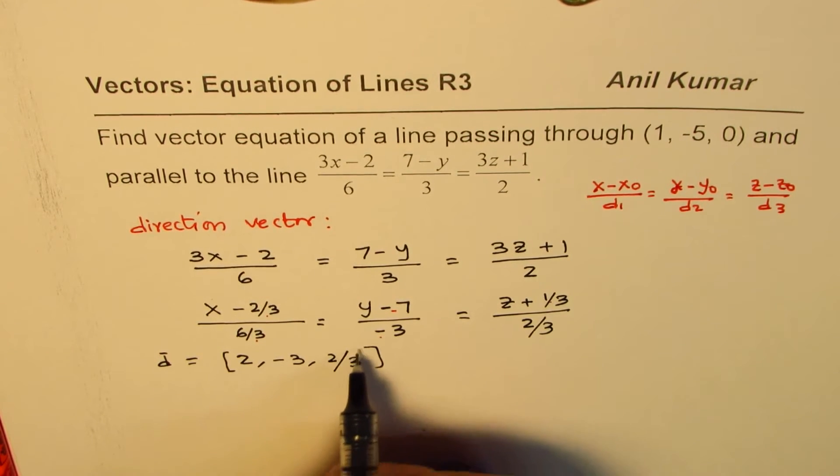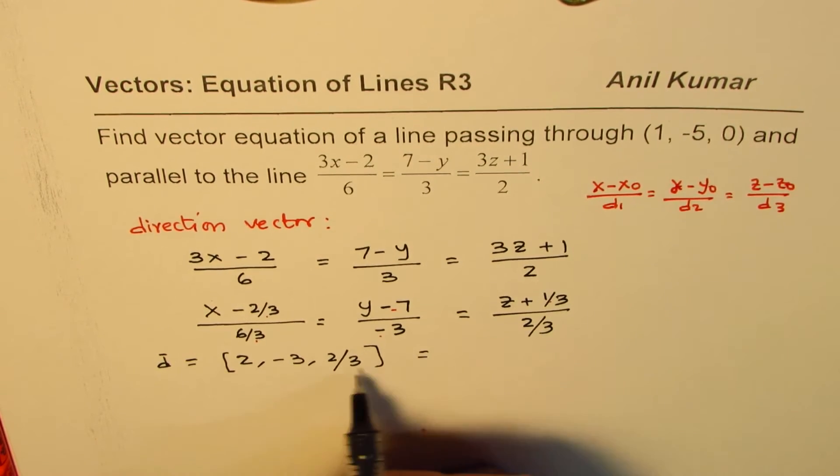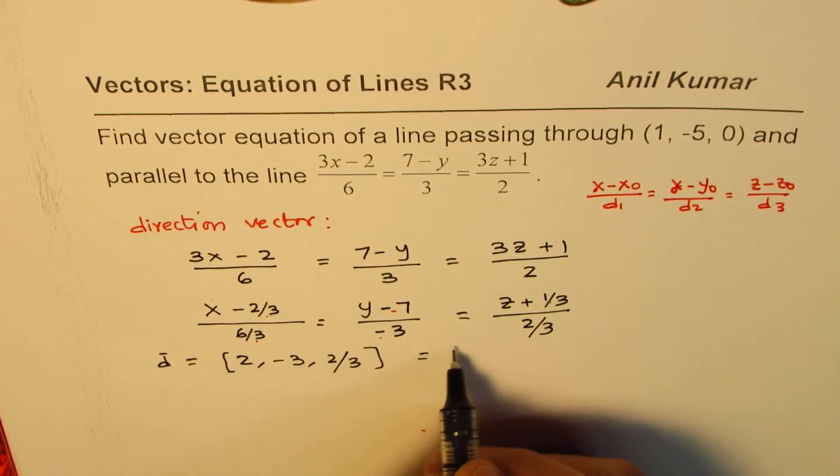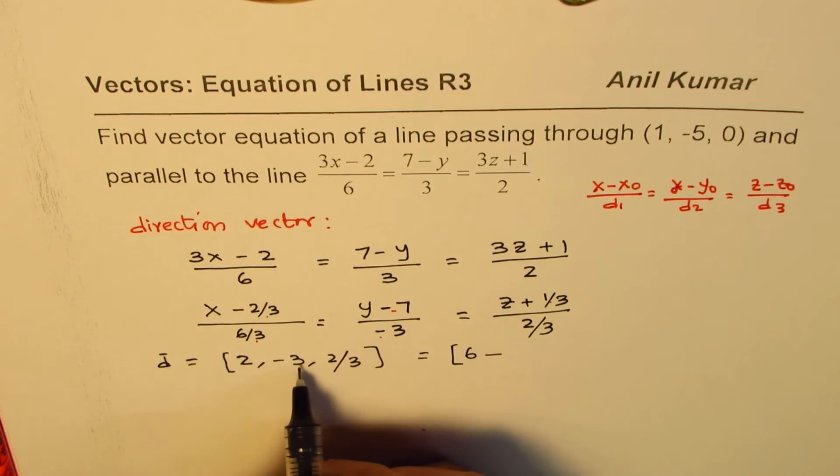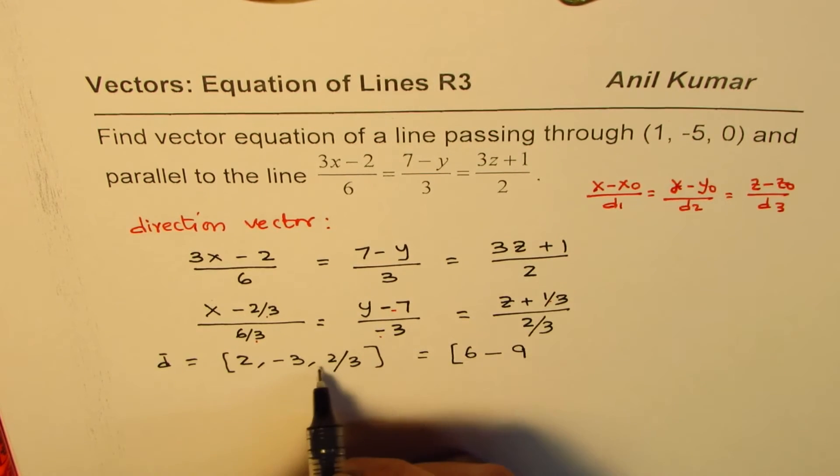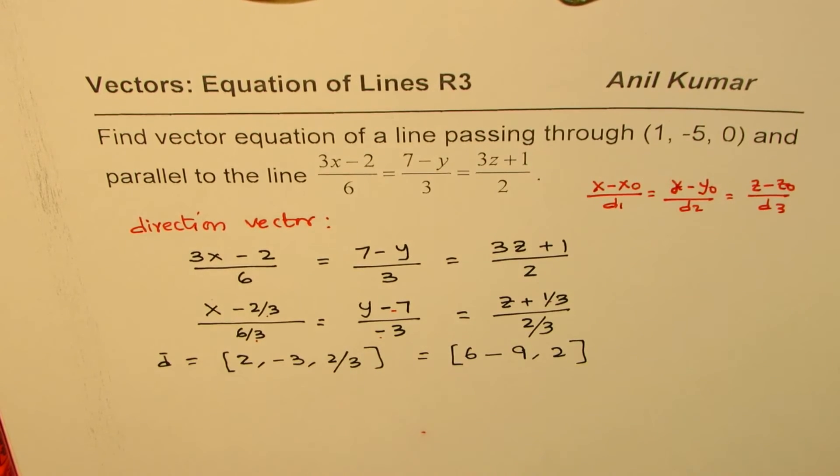Now, it is a practice to avoid fractions. So we'll multiply each term by 3. So we will write this direction also as (6, -3 times 3 = -9, and then we have 2). So we could also write like this. That's okay.